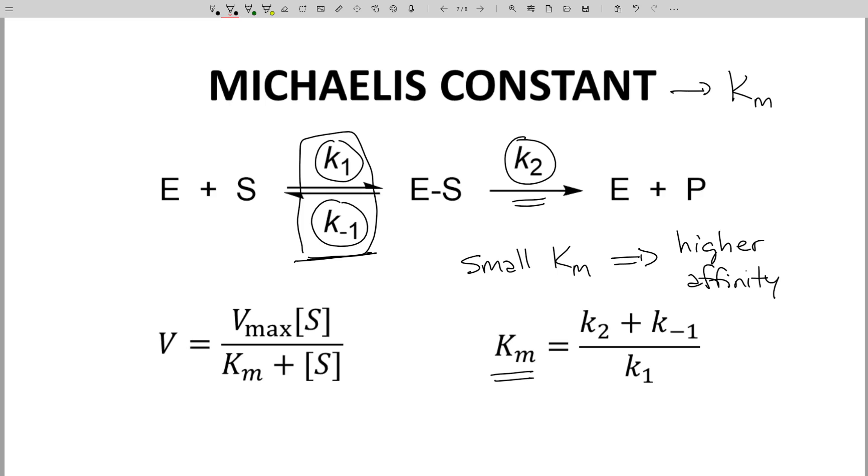Of course, Km values are specific for an enzyme-substrate pair. Just because a substrate has a small Km for one enzyme does not mean it has a small Km for other enzymes. That's our quick introduction to the Michaelis-Menten equation.